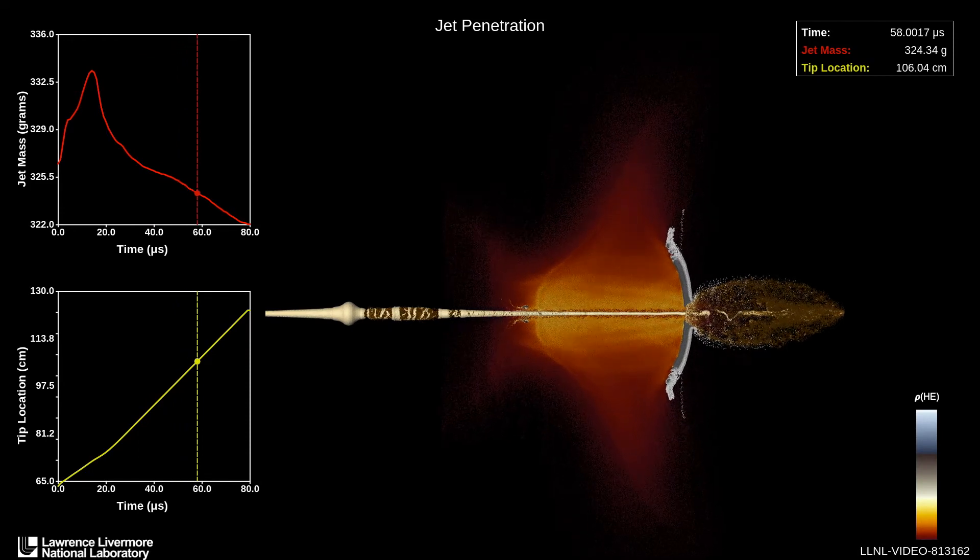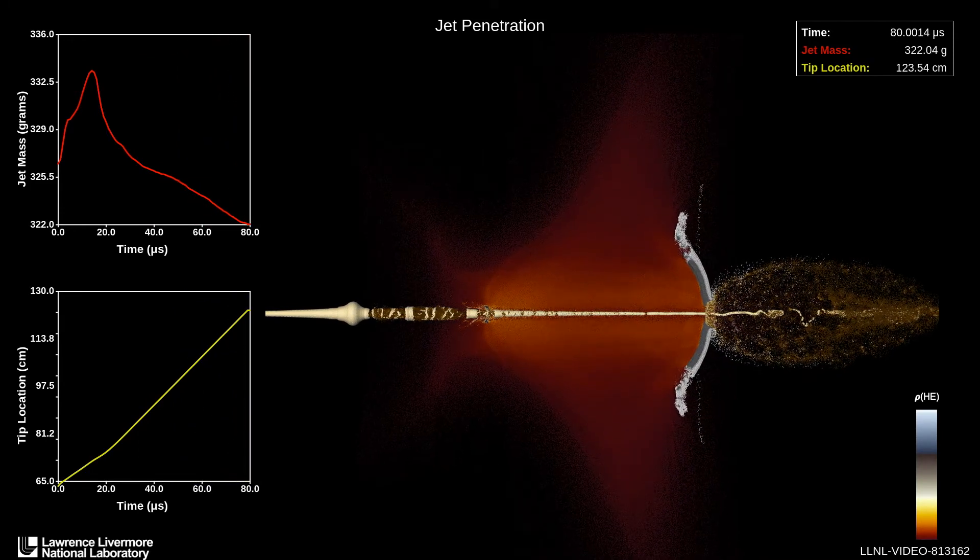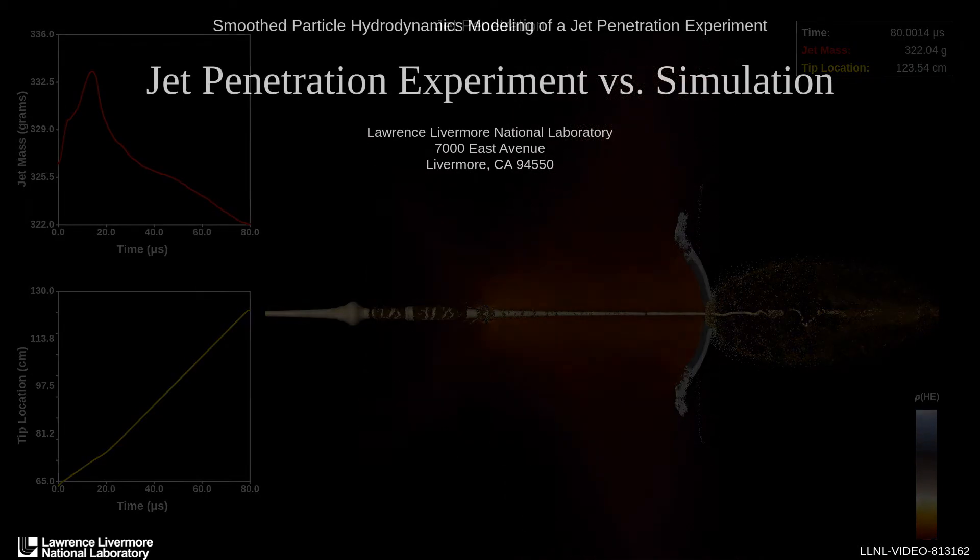Here we see a copper-shaped charge jet with an initial hypervelocity gradient. As this jet hits the high-explosive material, the force of the impact makes a hole, and the detonating high-explosive forces the jet tip aside, causing erosion and the fragmentation of the jet.